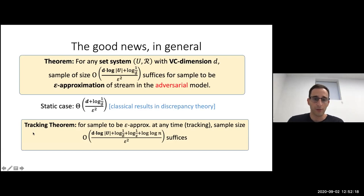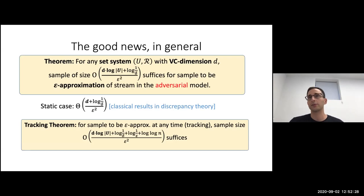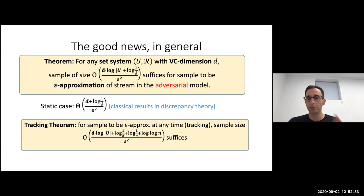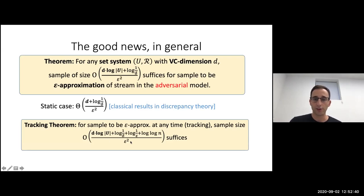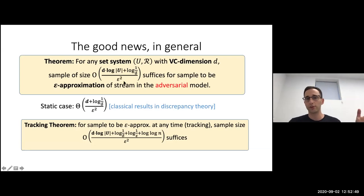We also have a tracking theorem version. If you want to be an epsilon-approximation of the data at every timestamp — not just at the end, but at every timestamp the sample is contained in an epsilon-approximation of the stream — you need just a slightly larger sample size. You could easily get a log N factor by union bounding over all N timestamps, but we managed to get this down to log log N.